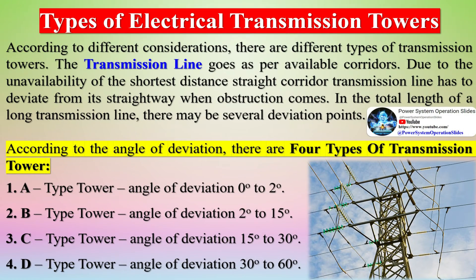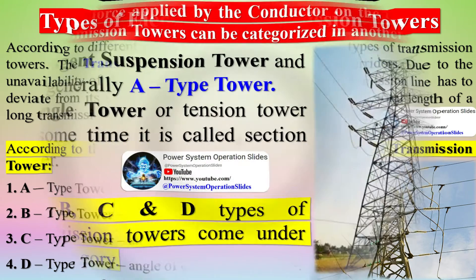According to different considerations, there are different types of transmission towers. The transmission line follows available corridors, and due to unavailability of straight corridors, lines must deviate when obstructions arise. In the total length of a long transmission line, there may be several deviation points. According to the angle of deviation, there are four types of transmission towers.